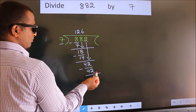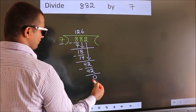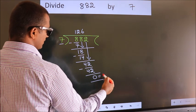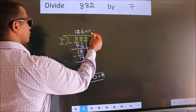No more numbers to bring it down. So, we stop here. This is our remainder. This is our quotient.